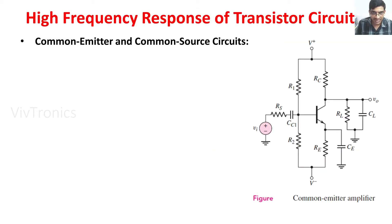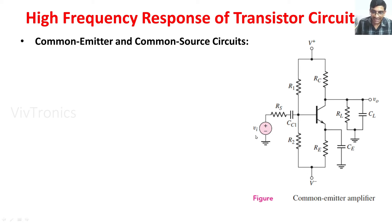First we are going to see the common emitter and common source amplifier configurations. In the common emitter amplifier circuit, the emitter is common for both input and output terminals. The circuit is driven by two voltage sources: V+ for the collector and V- for the emitter. The AC signal source is Vi, Rs is the source resistance, CC1 is the coupling capacitor, CE is the emitter bypass capacitor, R1 and R2 form the voltage divider bias, RC is the collector resistance, RE is the emitter resistance, and RL and CL are the load resistor and load capacitance.